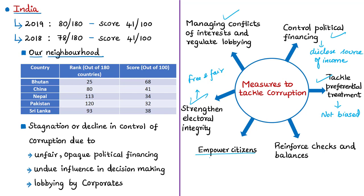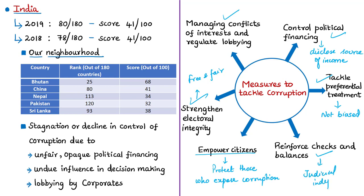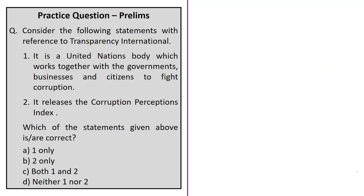The fifth recommendation is to empower citizens — governments should protect civil liberties and political rights, including freedom of speech, expression, and association, and engage civil society while protecting citizens, activists, whistleblowers, and journalists who monitor and expose corruption. The final recommendation is to reinforce checks and balances: governments must promote separation of powers, strengthen judicial independence, and preserve checks and balances. This concludes the discussion on the Corruption Perceptions Index 2019 and Transparency International's recommendations.